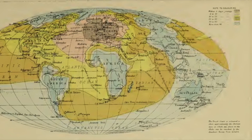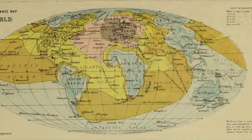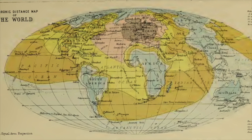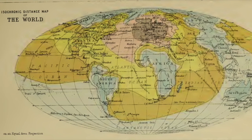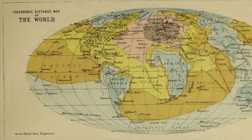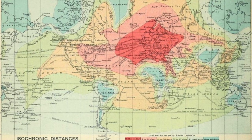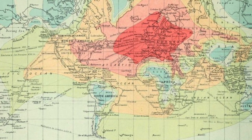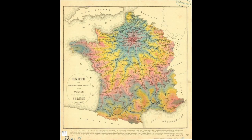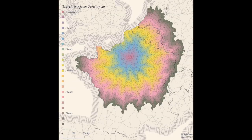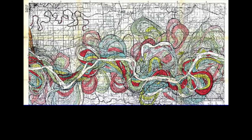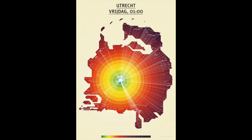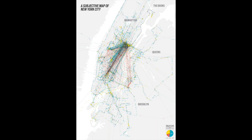The idea caught on quickly with mapmakers and many different versions emerged, based on various locations and scales. Over time these maps got better, more specific, and more accurate. As time passed, these maps grew in popularity and importance, becoming more technical over time. Today's versions combine information and aesthetic as never before.